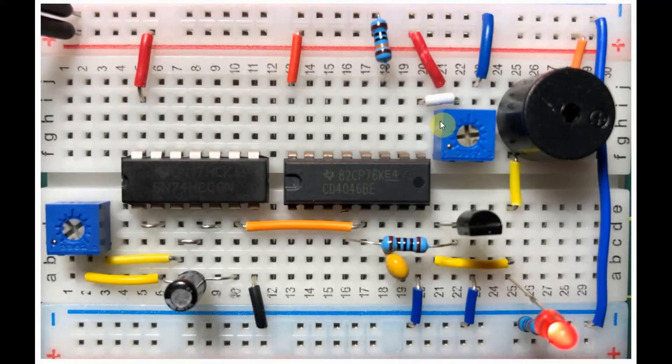Let's have a look at the components used in this project. We have the 7400 which is quad NAND gate. This IC is used to build the astable multivibrator. I am using the 2 NAND gates to build the multivibrator instead of the NOT gates.